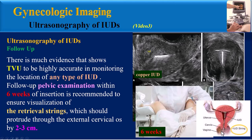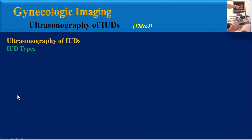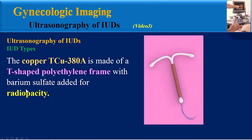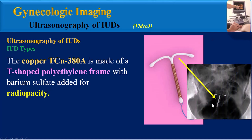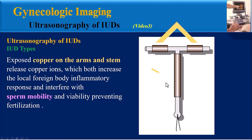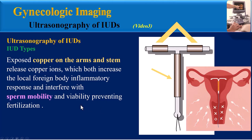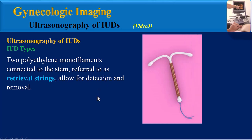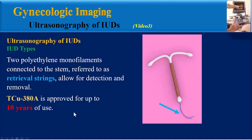The most common type of IUD is the copper IUD. It is made of a T-shaped polyethylene frame with barium sulfate added for radio-opacity. Copper ions released from the arms and stem increase the local foreign body inflammatory response and interfere with sperm mobility and viability, preventing fertilization. Two polyethylene monofilaments connected to the stem, referred to as retrieval strings, allow for detection and removal. The copper IUD is approved for up to 10 years of use.